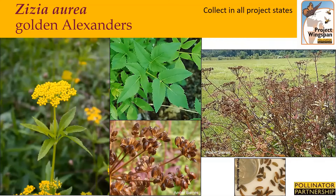Zizia aurea, or Golden Alexanders, is one of the first species to bloom on our target list. It occurs in both degraded and higher quality habitat areas, and grows to be approximately two and a half feet tall, forming occasional lateral stems. The leaves are compound and oddly pinnate with three or five leaflets. The flowers are flat to slightly rounded compound umbels of yellow flowers at the end of the upper stems, each about two to three inches across and consisting of about 12 umbelettes. Collection begins in late summer when the seeds ripen into capsules on the flower umbel, turning from green to brown when ready to harvest. Remove the entire flower umbel and put it into your collection bag.